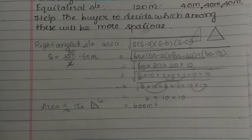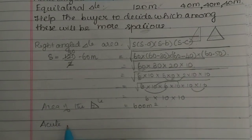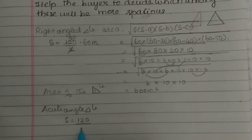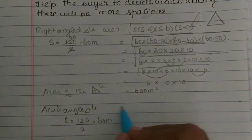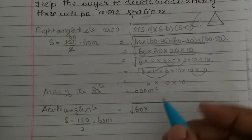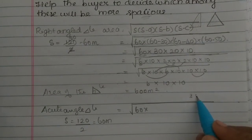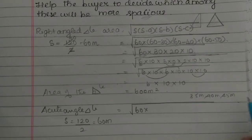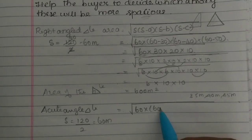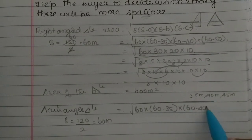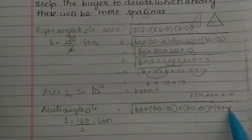Next, the acute angle triangle. S equals 120 by 2, that is 60 meters. The sides of the acute angle triangle are 35m, 40m, and 45m. So area equals root of 60 into (60−35) into (60−40) into (60−45), which is root of 60 into 25 into 20 into 15.